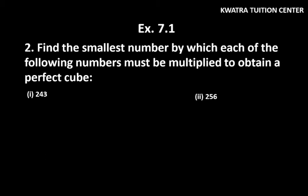Hello everyone, let's start with Exercise 7.1, Question number 2. It says: find the smallest number by which each of the following numbers must be multiplied to obtain a perfect cube.